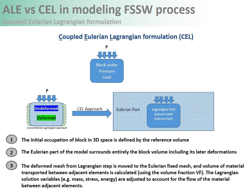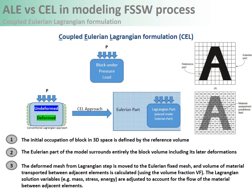For the CEL formulation, the concept is different. To demonstrate the principle: assuming we simulate the deformation of a sample block under pressure, in the conventional Lagrangian approach we mesh the part itself, attaching the mesh to the material. However, in the CEL approach, we first create an Eulerian part and define the Lagrangian part as elements filled with the given material inside it. As the material deforms, it flows inside the Eulerian mesh. The CEL approach has three steps: defining the reference volume, assigning the Eulerian grid that surrounds entirely the reference volume including its later deformations, and finally moving the deformed mesh from the Lagrangian step to the Eulerian fixed mesh. The material assignment to Eulerian elements is calculated using the Volume Fraction tool, specified as a decimal between 0 and 1 — 0 for elements filled with void and 1 for elements filled with material.